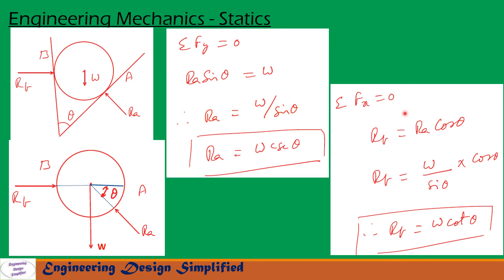Similarly, resolving forces along x direction: sigma Fx equal to 0. Rb is acting horizontal towards right and the horizontal component of Ra is Ra cos theta acting towards left. So we get Rb equal to Ra cos theta. Substituting Ra, we get Rb equal to w divided by sin theta, multiplied by cos theta. Since cos theta divided by sin theta is cot theta, we get Rb equal to w cot theta.